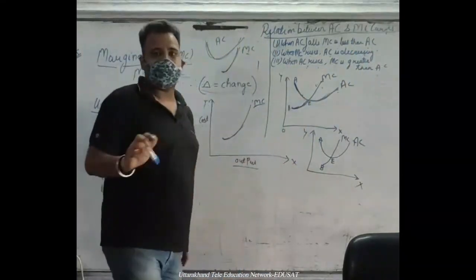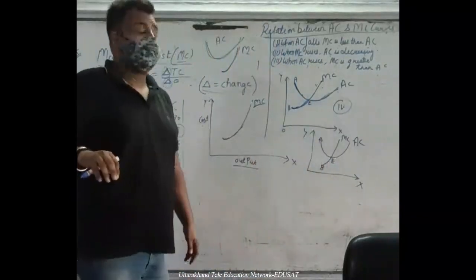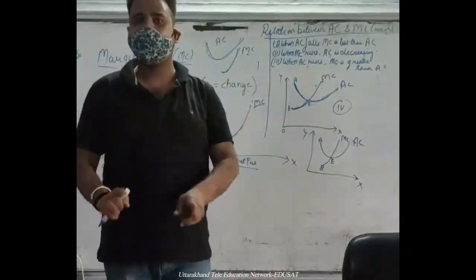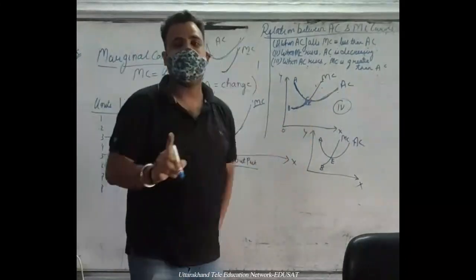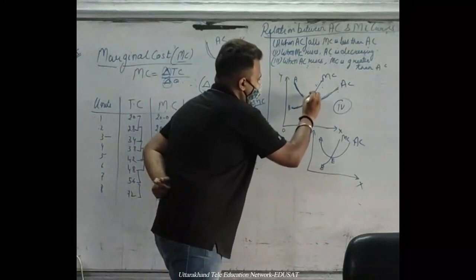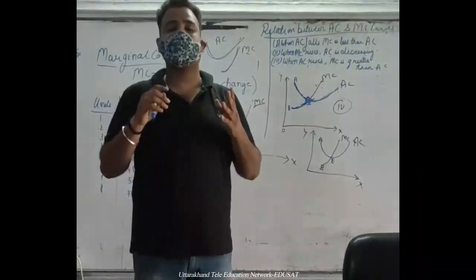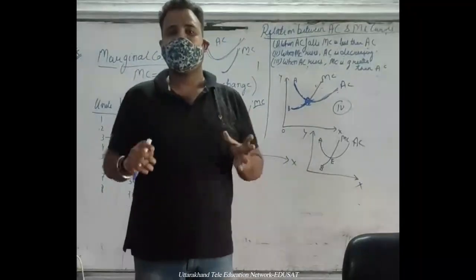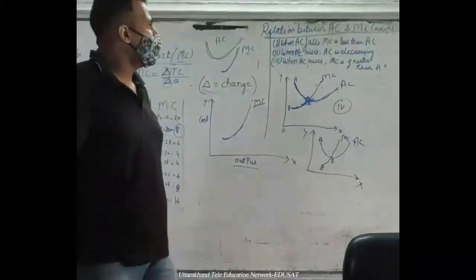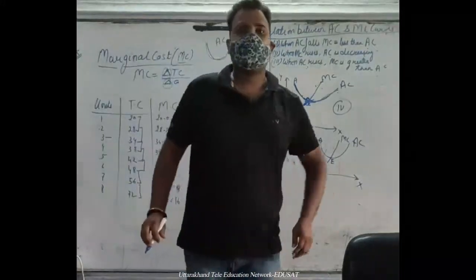So between the two, at the lowest point of AC — the minimum point — MC crosses AC. At the lowest point of AC, MC equals AC. This is the lowest point discussed.